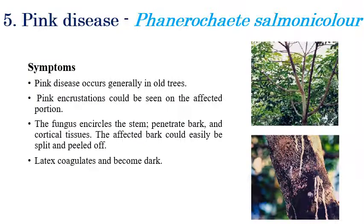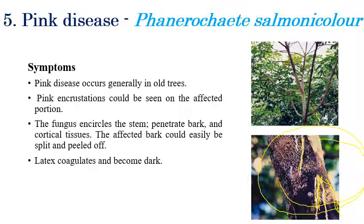The next disease is Pink Disease, caused by Phanerochaete salmonicolor. This is one of the important diseases, mostly affecting old or aged plants. Gummy ooze — pink gummy substances — can be produced from the stem regions. If you cut open the bark, the cortical cells are easily brittle due to fungal infection. The fungus penetrates inside the bark, encircles the entire stem, and mycelial growth can be seen inside the stem.